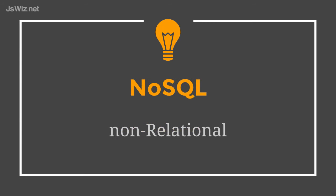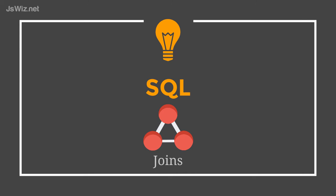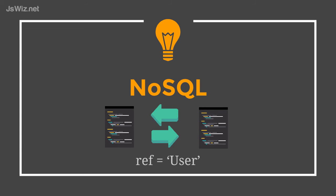Number two, it is a NoSQL or non-relational database. The main difference when compared to a SQL database is you're not able to use joins to connect your database tables. Instead, we can use references to link between our various documents.